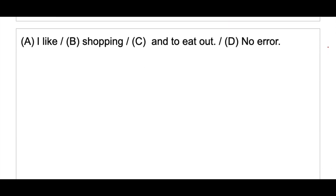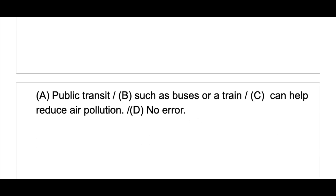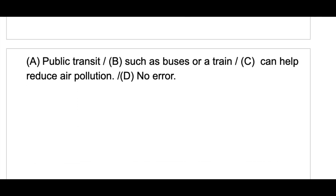Next: 'I like shopping and to eat out.' Here you have 'shopping' as ing, so for parallelism you also need ing: 'eating out' instead of 'to eat out.' Next: 'Public transit such as buses or a train can help reduce air pollution.' The connector is 'or', connecting 'buses' (plural) and 'a train'. For parallelism, plural 'trains' should be used instead of 'a train.'